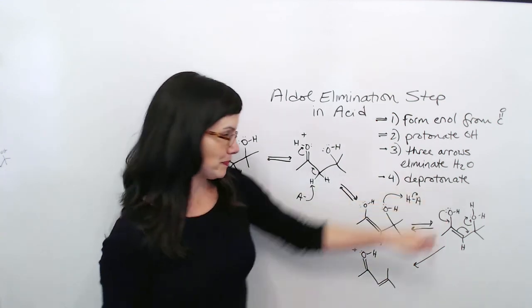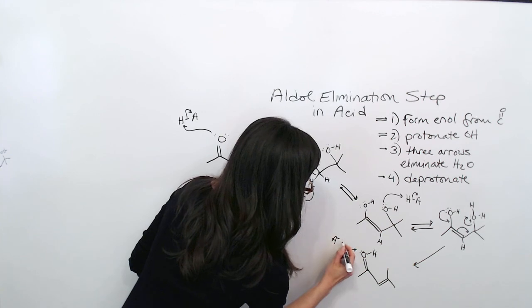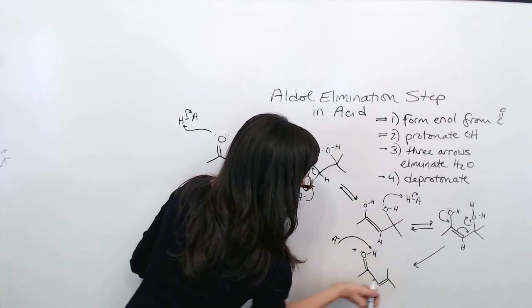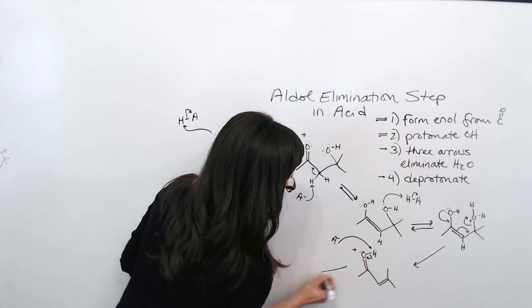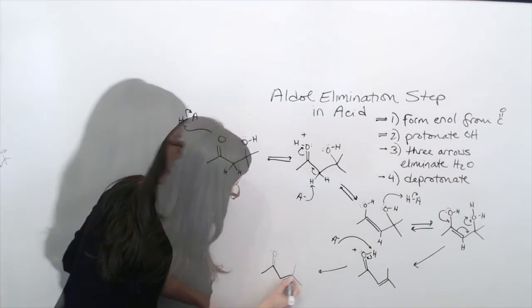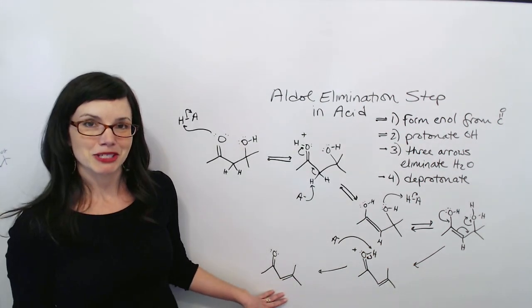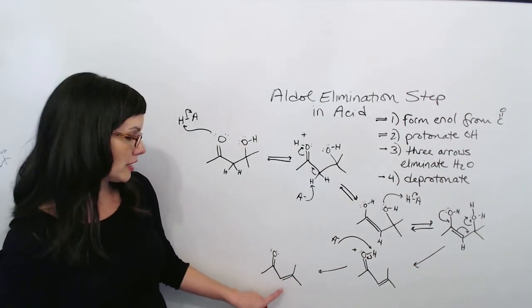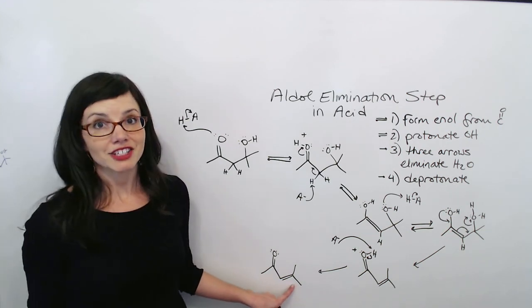And that is our final step. So we're going to use our anion from the acid to grab this hydrogen and push the electrons back onto O. There's our final elimination product, the condensation product, which is an alpha-beta unsaturated ketone.